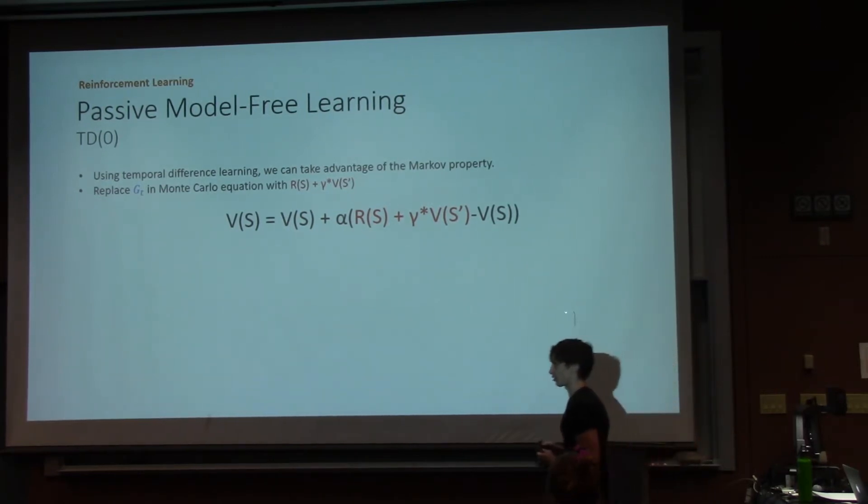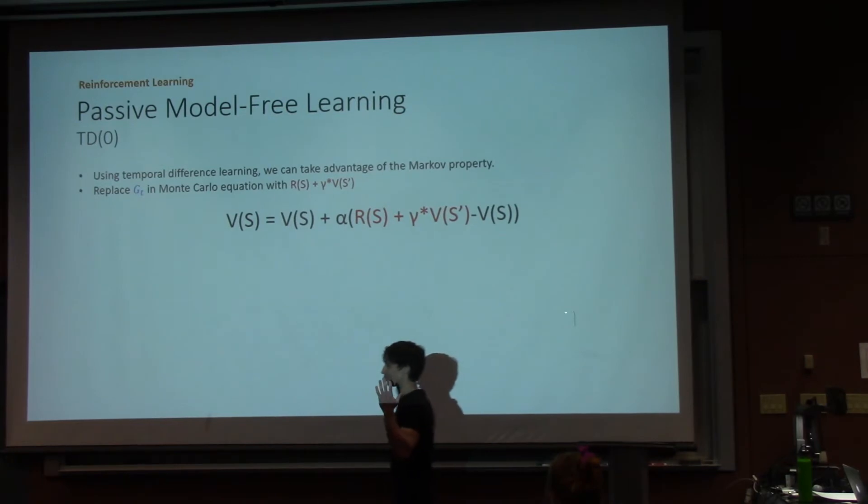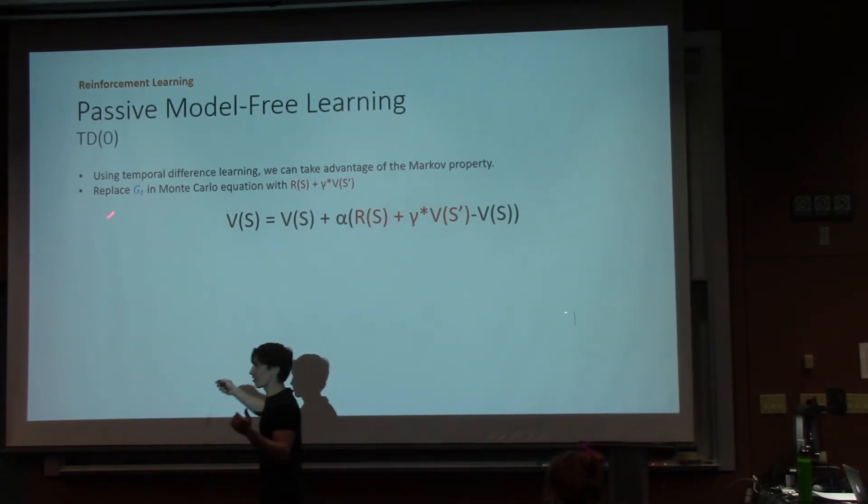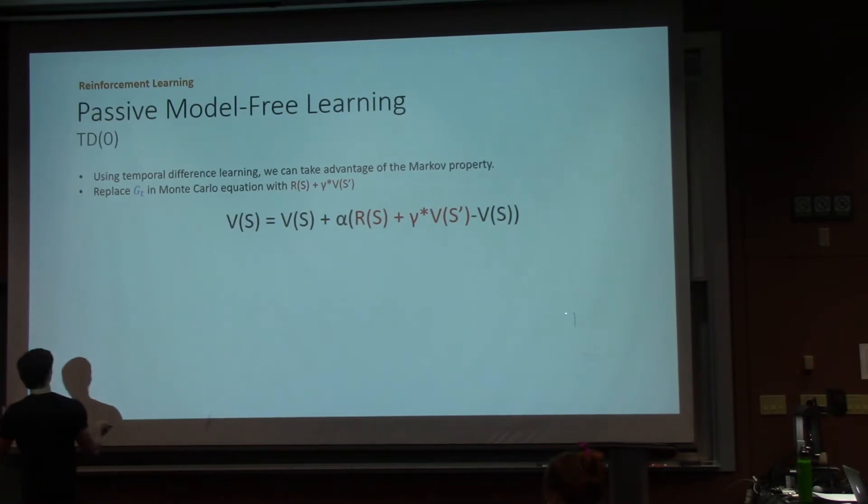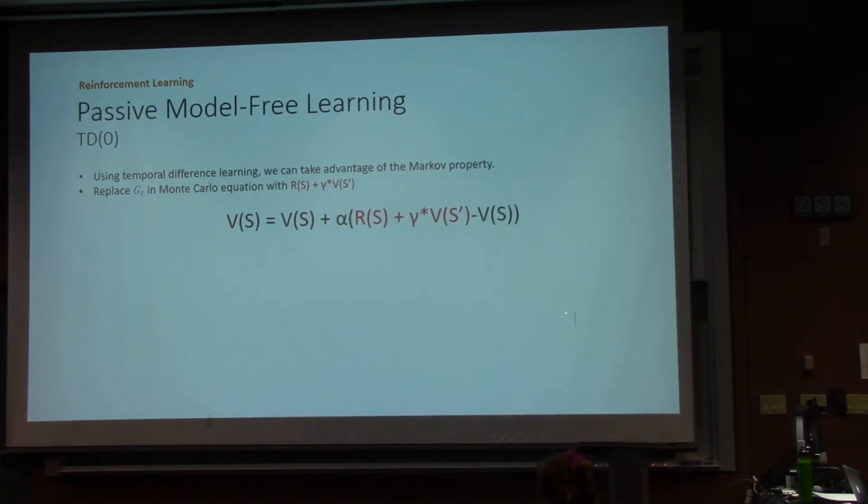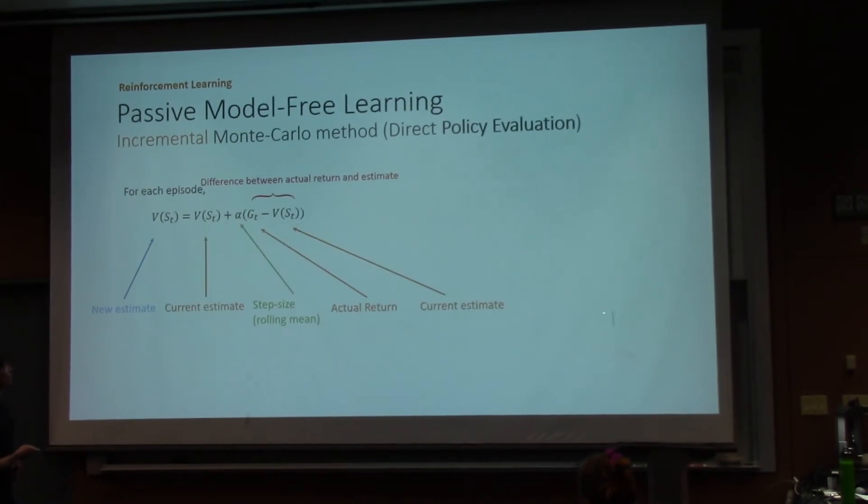You guys learned it as temporal difference learning. That technically includes TD(0) and Q-learning. Q-learning is a temporal difference learning algorithm. So when I say TD(0), I mean the temporal difference learning that you were taught. So with this, we can take advantage of the Markov property. So now we're not wasting information.